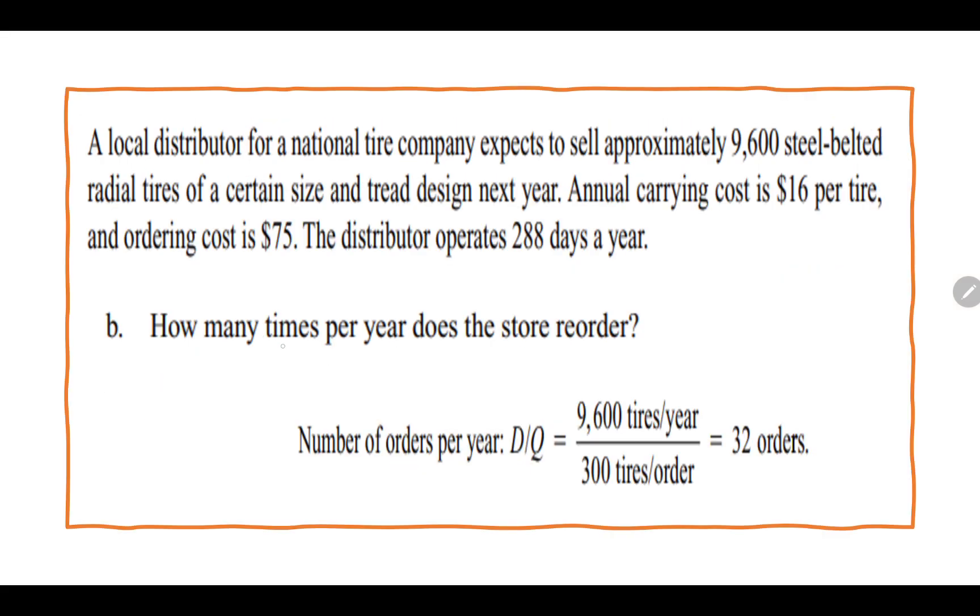Next part is how many times per year does the store reorder? They are asking you number of orders. How many times in a year the company is placing an order to the supplier? The formula for that is D by Q. D is 9,600, and Q we have identified from the previous slide, that is 300. So you have a total number of 32 orders in a year.